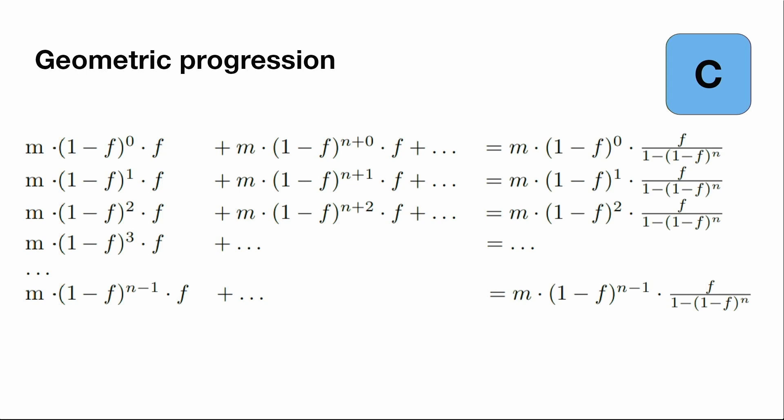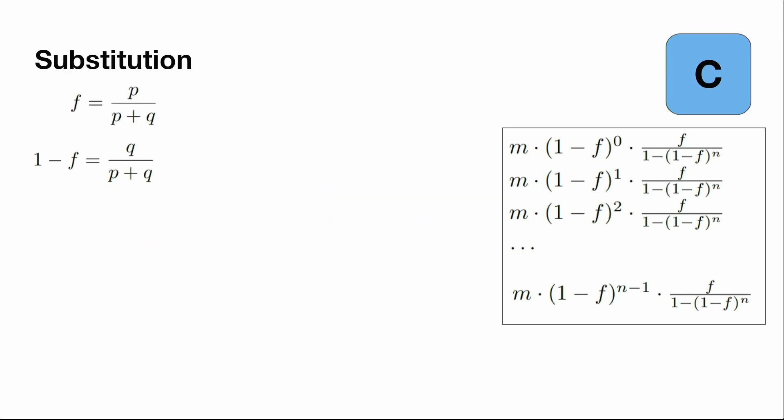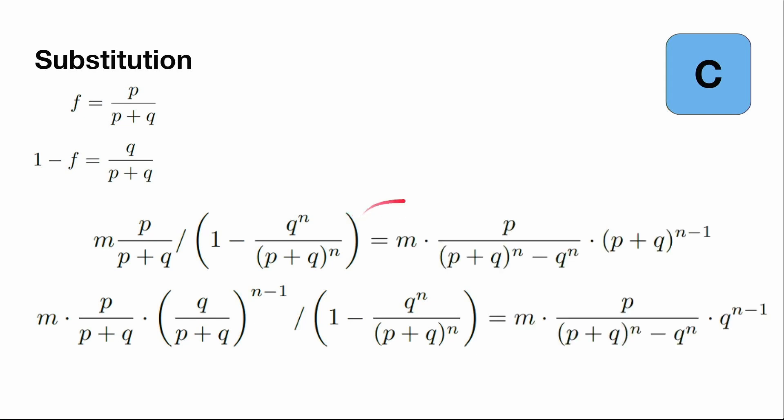Let's say that f is p divided by p plus q, and then 1 minus f is q divided by p plus q. Then we can just substitute these values to this geometric progression sum. Let's try to make it a bit more beautiful, and in the end we will get this result. This is for the first pirate and this is for the last pirate.